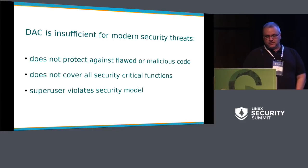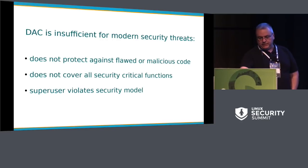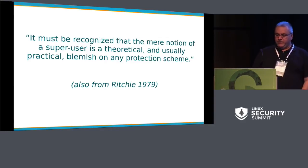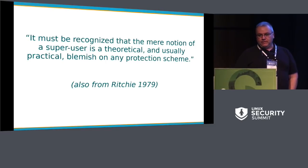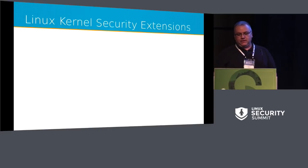If a process is running with privilege, it will have access to all kinds of things it doesn't need under DAC. The super user or root user can essentially do anything, which violates the security model you've implemented. Dennis Ritchie pointed this out, saying that if you have the notion of a super user, it's a theoretical and usually practical blemish on any protection scheme. Historically, the amount of problems we've had with privilege and super user escalation is significant. That forms the background for how we've been involved in retrofitting security extensions to Linux to meet the requirements of the modern era.